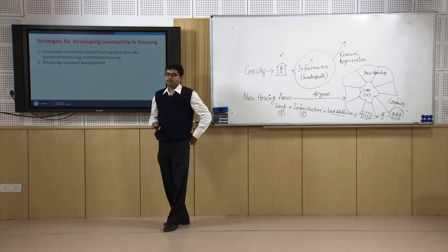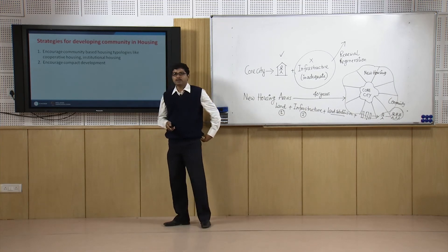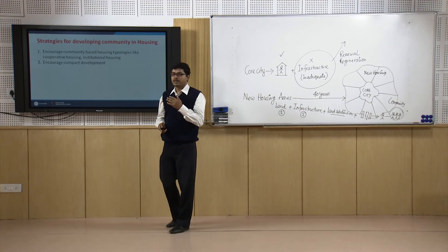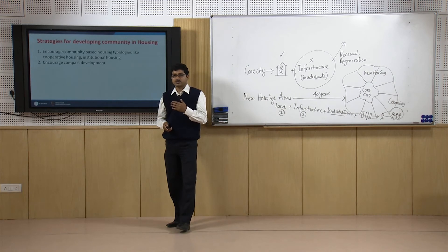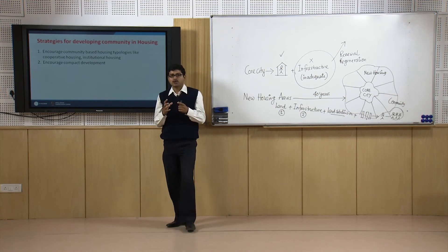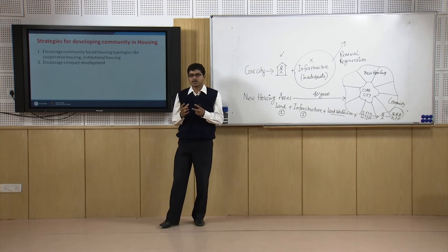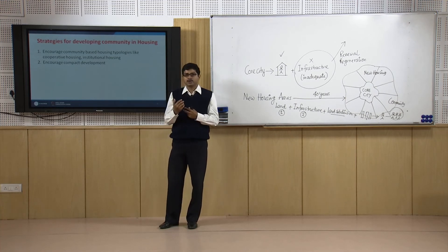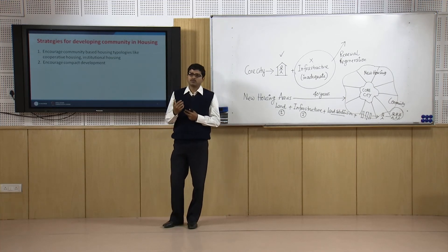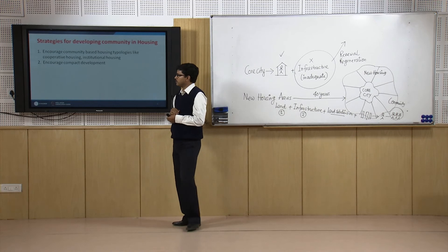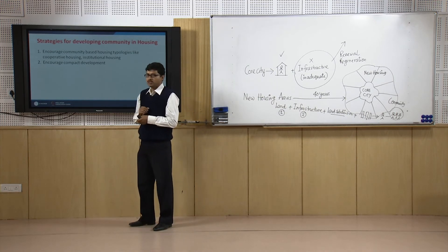The second strategy is to encourage compact development. The more you encourage compact development, the more possibility there is for social interaction and social mixing. More compact development ensures at least some amount of interaction because of physical location — all building blocks and clusters are designed so that you have to mix with people, share pedestrian ways, and share green open space.